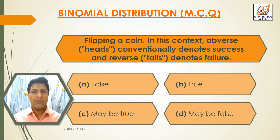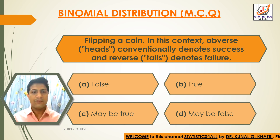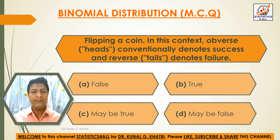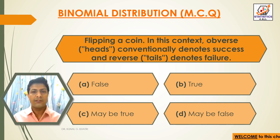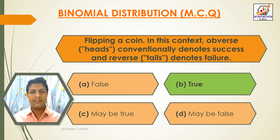Next question: Flipping a coin — in this context, observe that heads conventionally denotes success and tails denotes failure. Option A: False. Option B: True. Option C: May be true. Option D: May be false. The answer is option B — True. Heads conventionally denotes success and tails denotes failure — that is true.